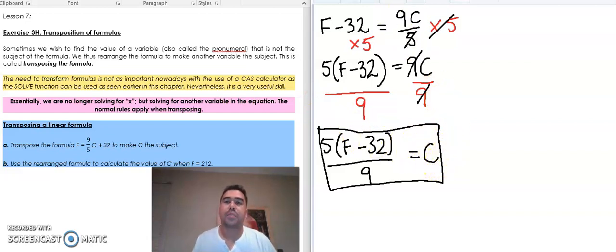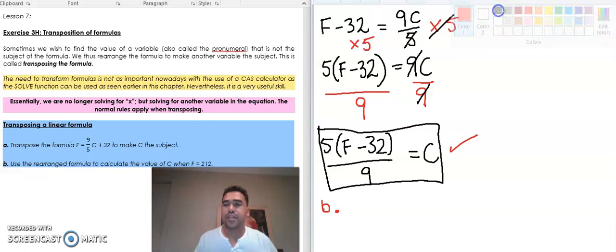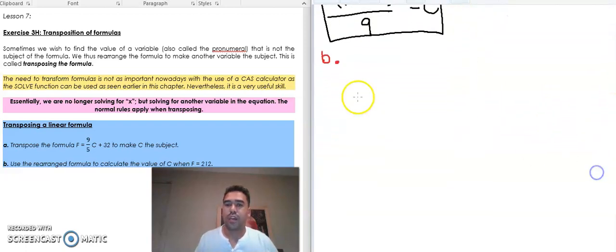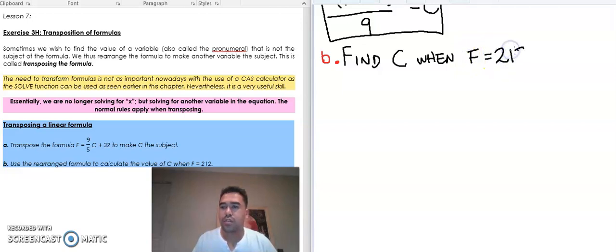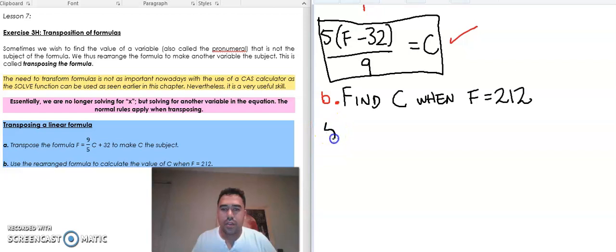And that's what we're going to do for the next example. So B, use the rearranged formula we have here to calculate the value of C when the Fahrenheit temperature F is 212. That right there is just a simple substitution. So we're going to find C when the F value, F is equal to 212.